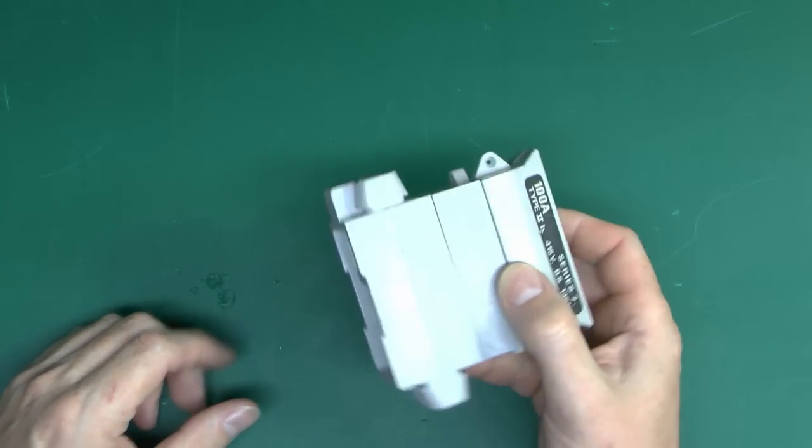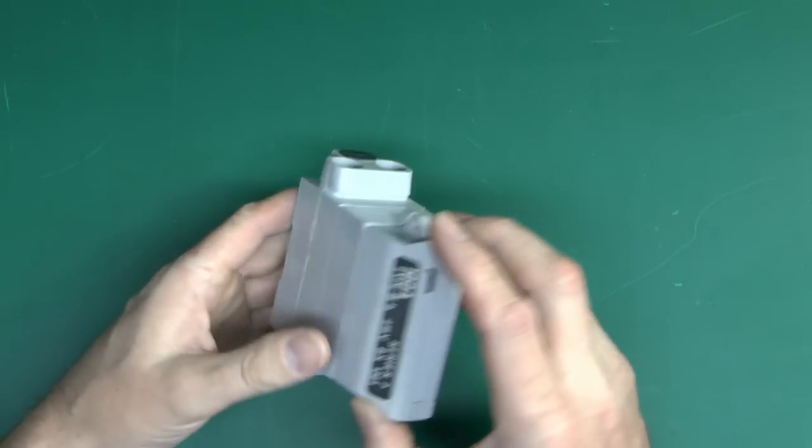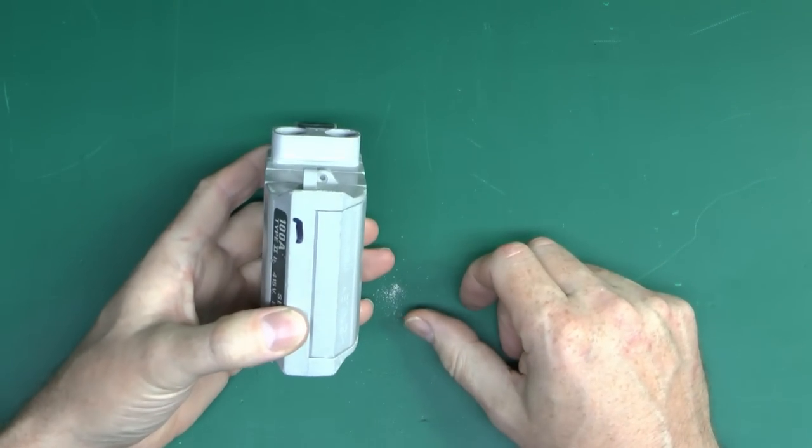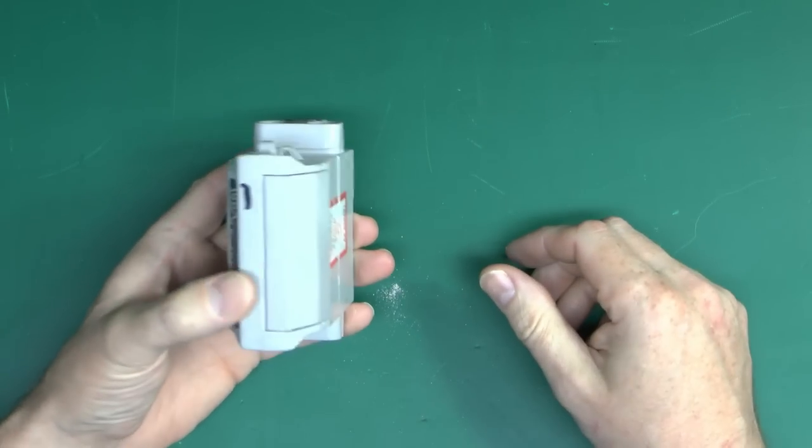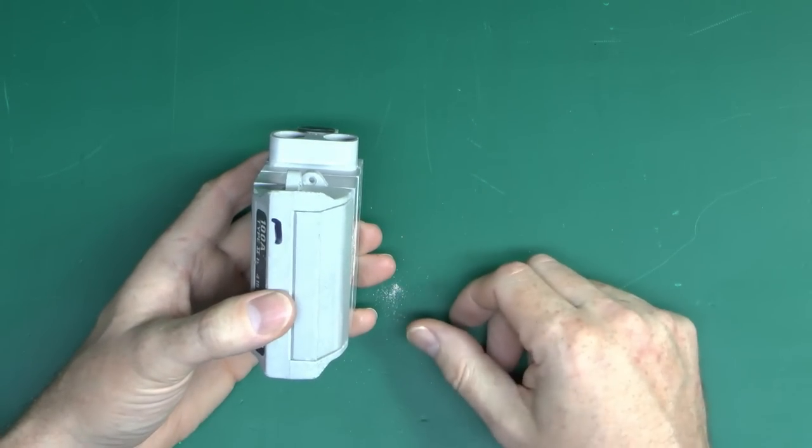Now this one is just a single fuse on its own. This will be used for a single phase supply. There would also only be a neutral block next to this. You can also get these in three phase versions which have three of these and your neutral block as well.